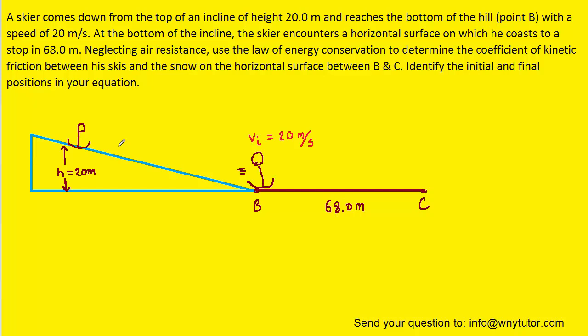It turns out that we really don't even need the information pertaining to his initial height. All we really need to do is consider the initial position over here at point B, which we can label initial, and then his final position over here at the point C, where the final speed of the skier is 0 meters per second. So we can label that as being final. That's going to be our focus. We can actually remove the hill from this scenario.